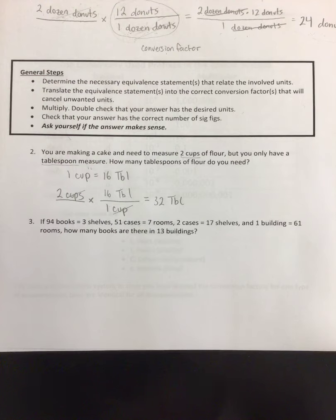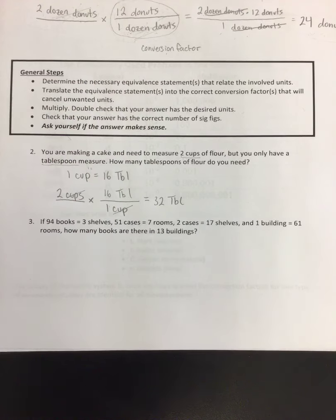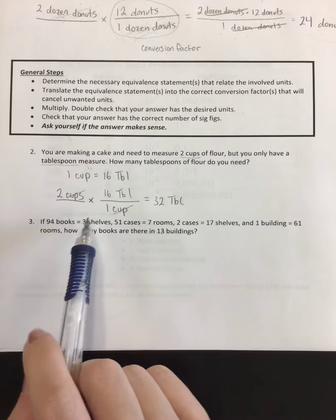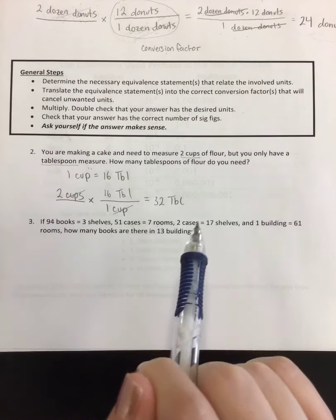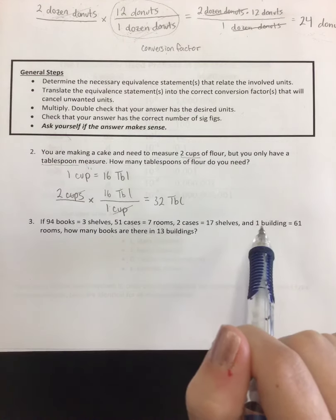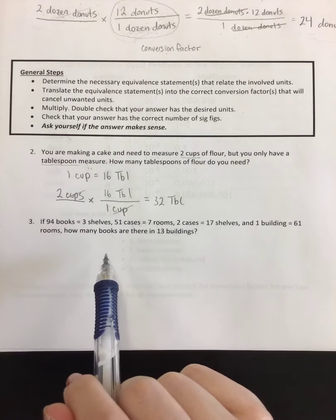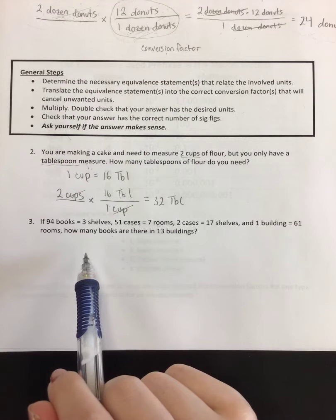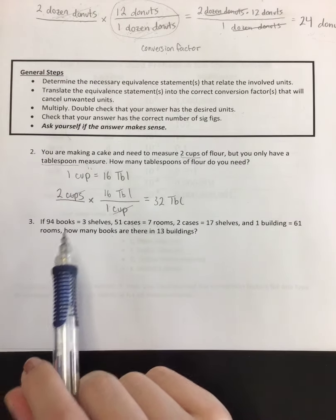Okay, now we're really going to test ourselves. Because things can get a bit more complicated. So what if I know a bunch of random facts, like if 94 books equals 3 shelves, 51 cases equals 7 rooms, 2 cases equals 17 shelves, and 1 building equals 61 rooms, then how many books are there in 13 buildings? Obviously a very crazy kind of example, but this kind of logic that we have is very relevant to what we're about to do for chemistry.